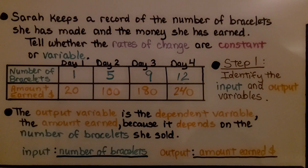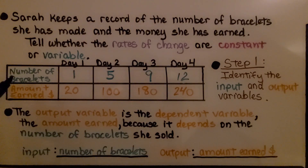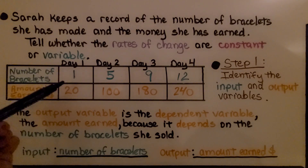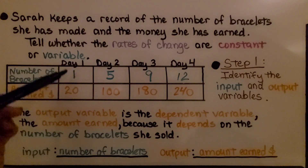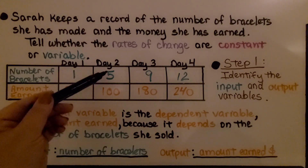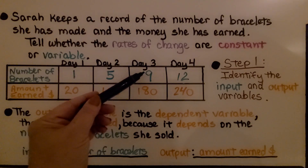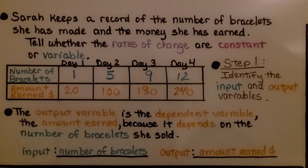Sarah keeps a record of the number of bracelets she's made and the money she's earned. Tell whether the rates of change are constant or variable. The table shows Day 1: 1 bracelet, $20 earned. Day 2: 5 bracelets, $100 earned. Day 3: 9 bracelets, $180 earned. Day 4: 12 bracelets, $240 earned.